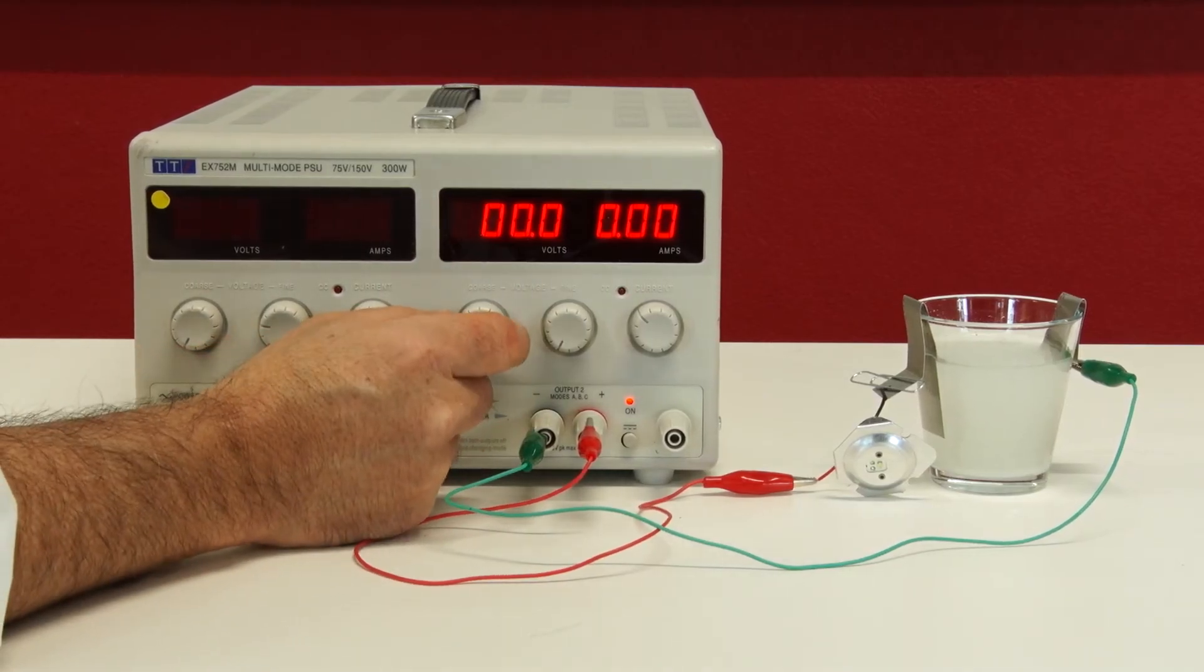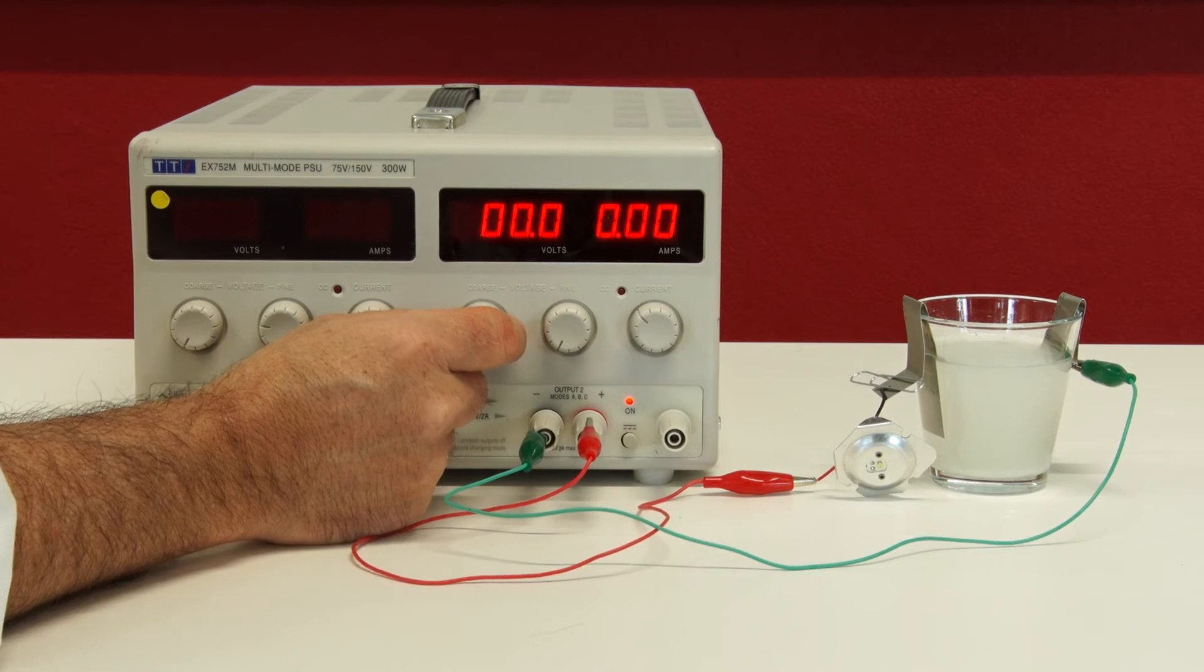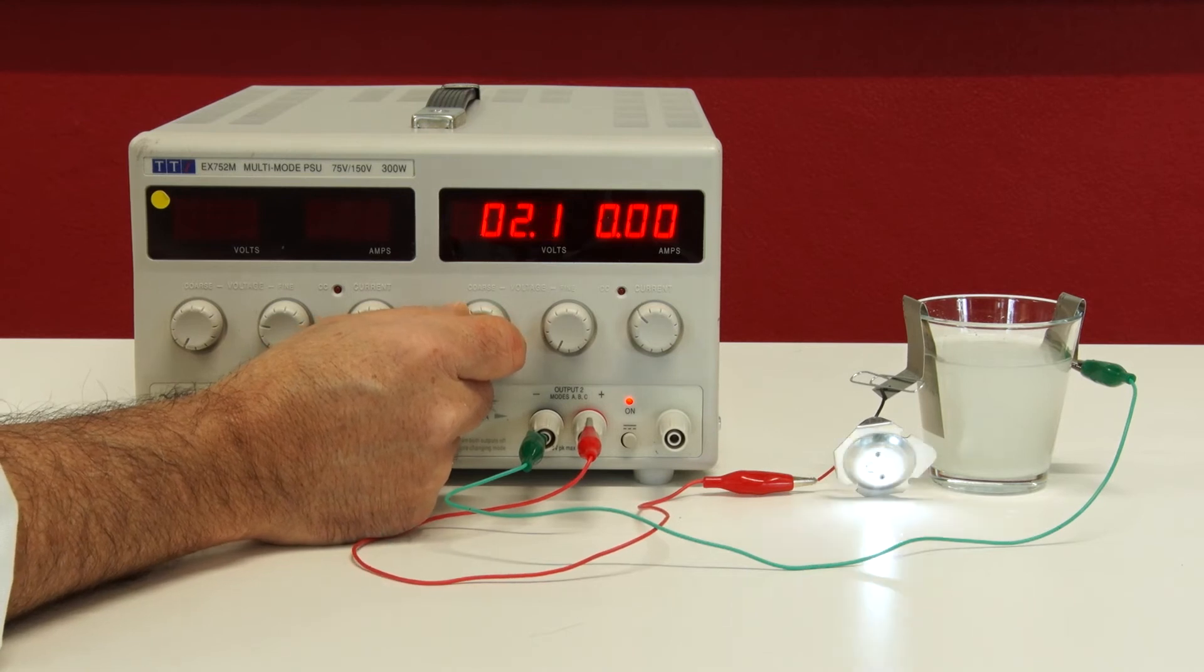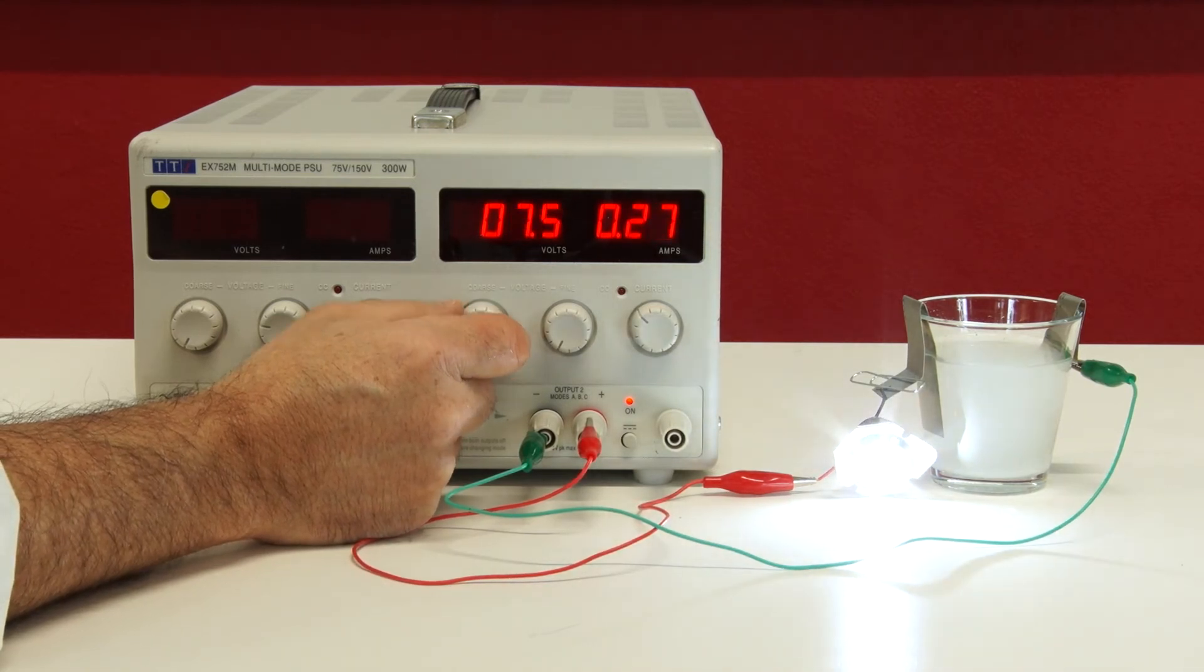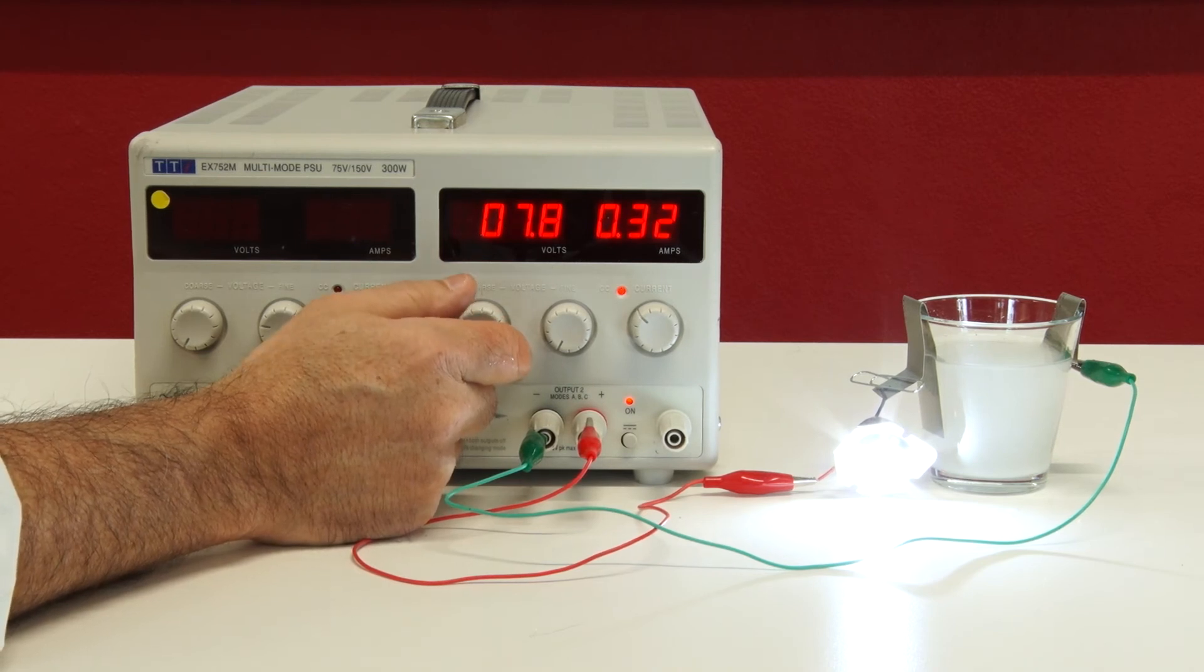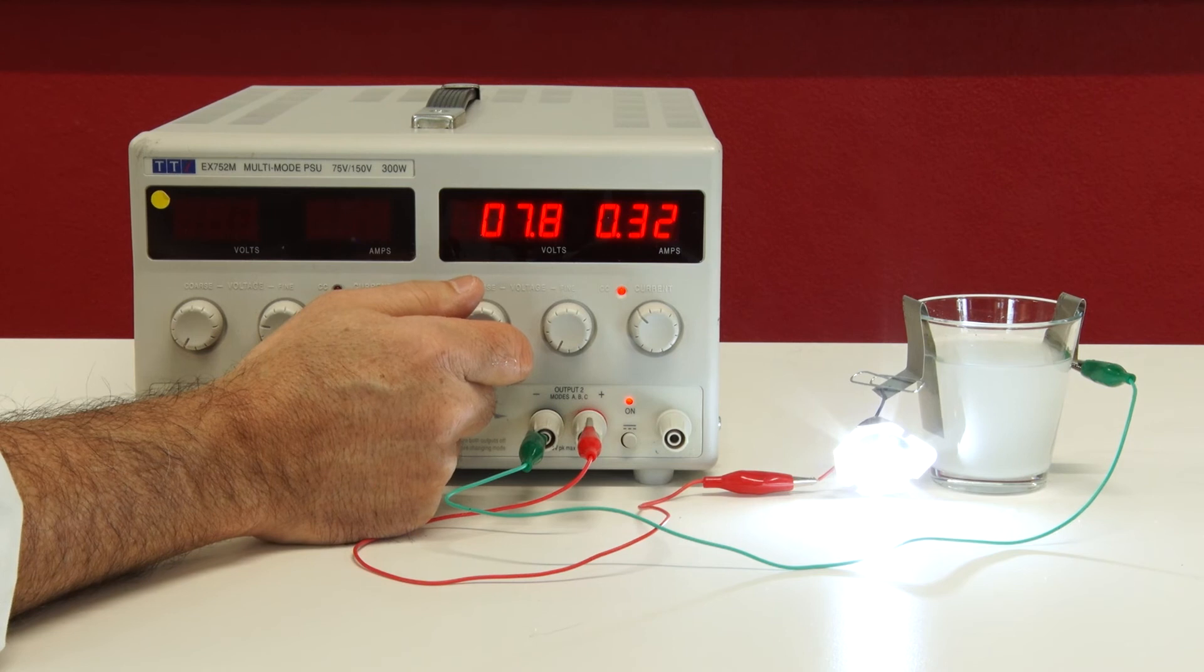I'm now going to turn up the voltage across the two electrodes. Clearly, there is more current flowing than in the case of just pure pond water.